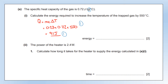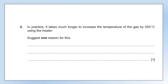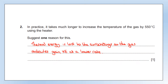The power of the heater is 2.4 watts. Calculate how long it takes to supply the energy. Average power = energy transferred ÷ time. Rearrange and substitute to get our working mark, then the correct answer with unit gets the second mark. In practice it takes much longer to increase the temperature of the gas by 550°C. One reason: thermal energy is lost to the surroundings, so the gas molecules gain kinetic energy at a lower rate, giving a lower rate of temperature change.